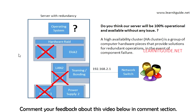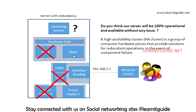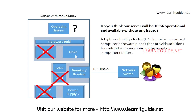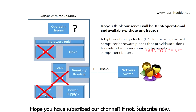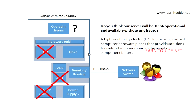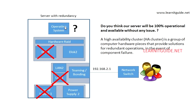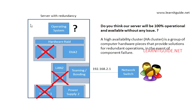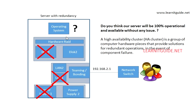This image shows you clearly: anything that happens to your hardware, the redundant hardware will help serve 100% operationally. Disk 1 goes down, Disk 2 is up. LAN 1 goes down, LAN 2 becomes active. Power Supply 1 goes down, Power Supply 2 runs the server. But the operating system has no redundancy — this is the problem with a single standard server.